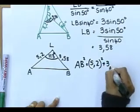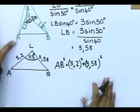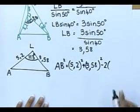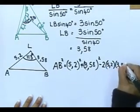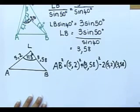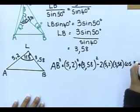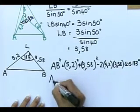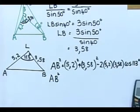plus 3.58 in a bracket and square. What does the cos rule say? Minus 2 times 5.2 times 3.58 multiplied by the cos of my included angle, which is 113 degrees. Work out AB squared, and then we can find the square root.